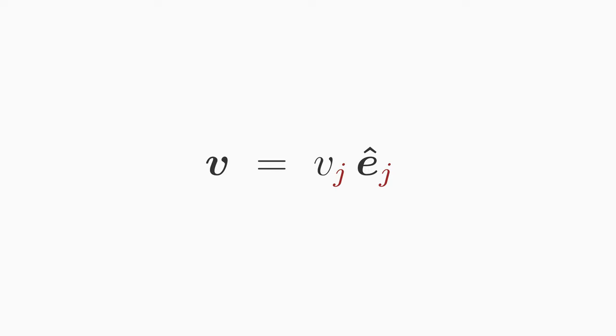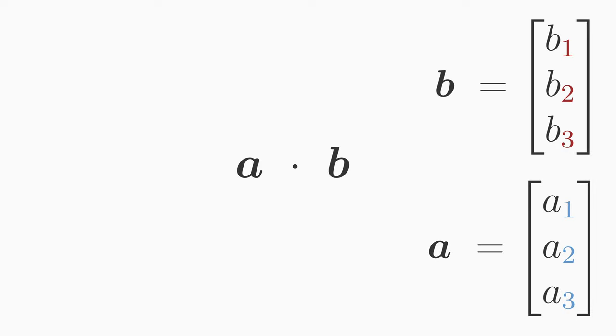It becomes even more compact if we omit the big sum sign according to the summation convention. Look how compact the vector v can be represented in a basis. v is equal to vj times ej. Here, as you know, we sum over index j. Whether you call the index j, i, or k, or any other letter is of course up to you.